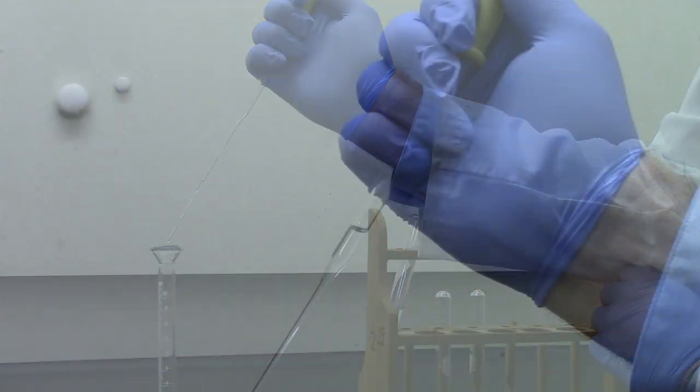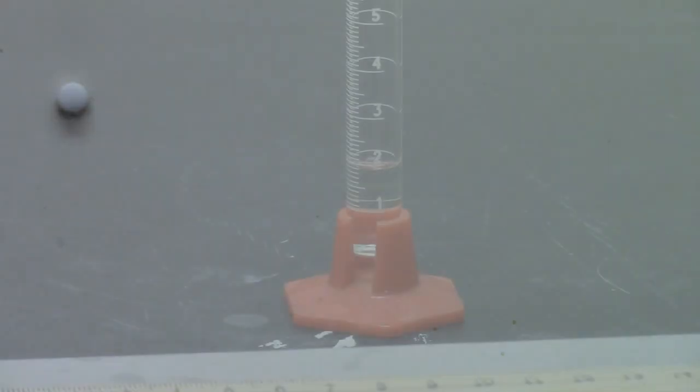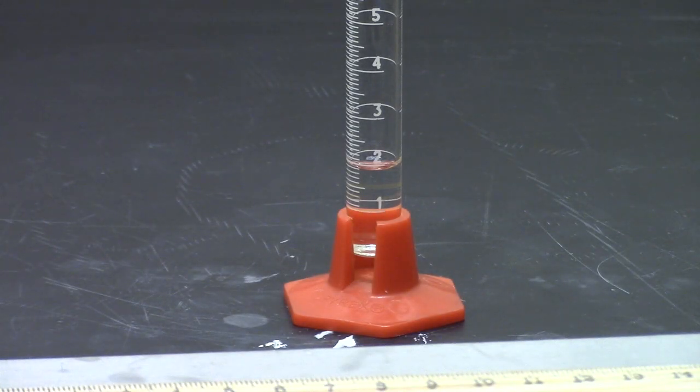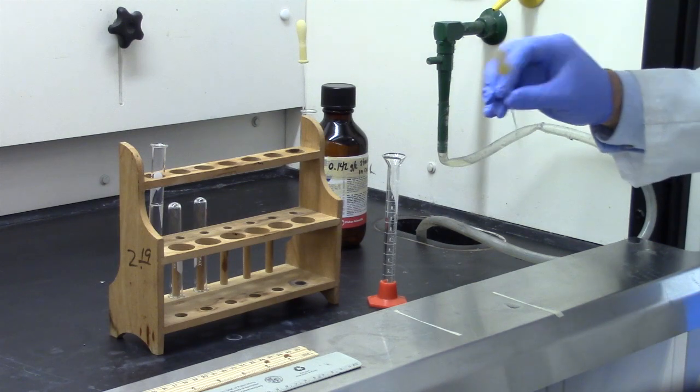Count the number of drops of cyclohexane it takes to go from 1.0 ml to 2.0 ml and record. Be careful not to break the tip. It should take 70 or more drops. If it takes less, obtain a different pipette.